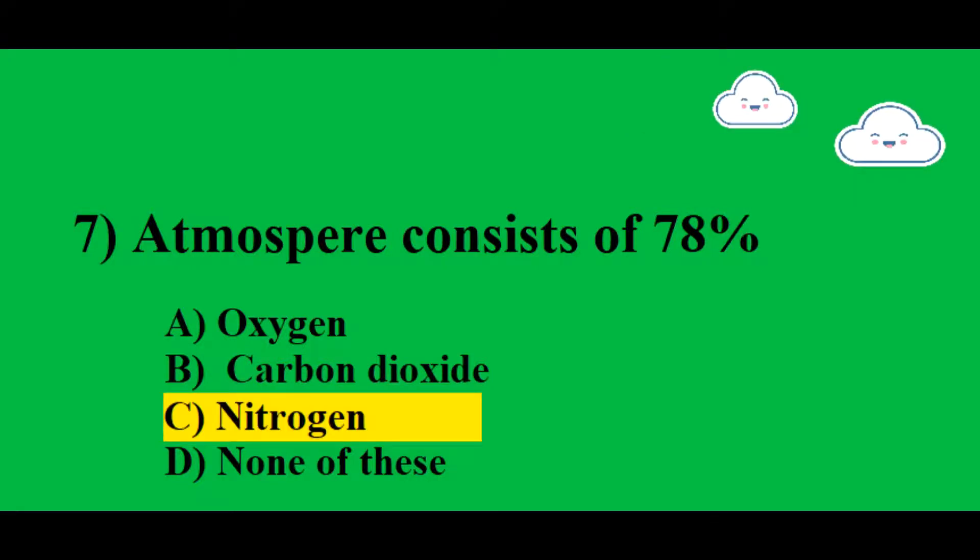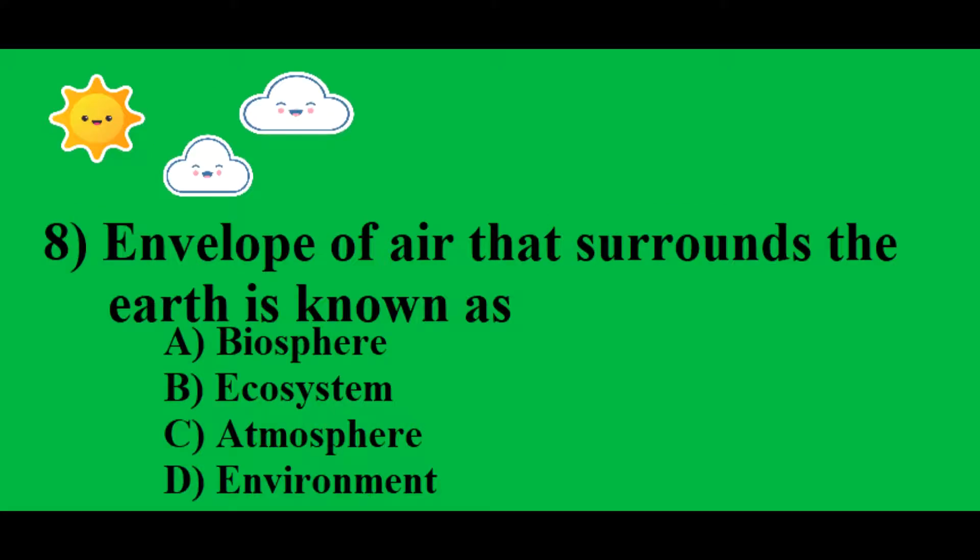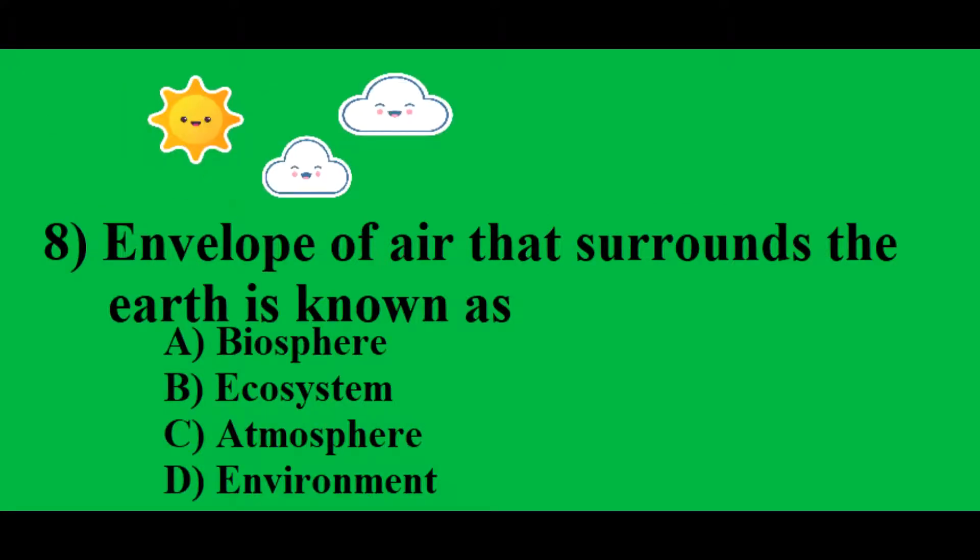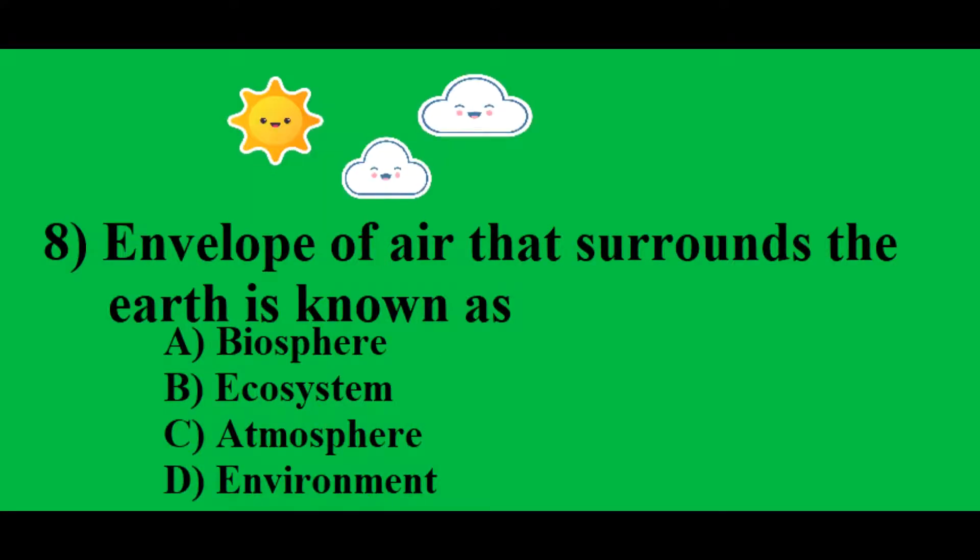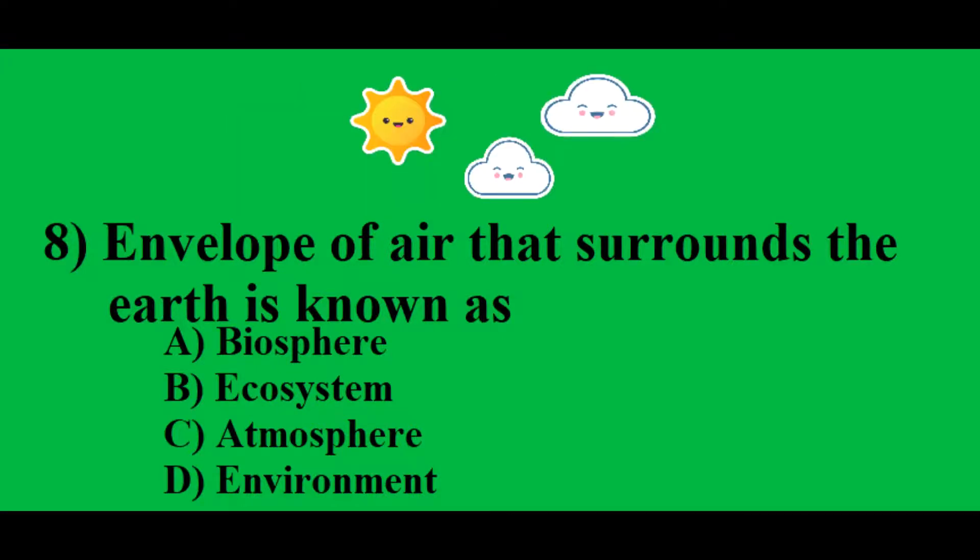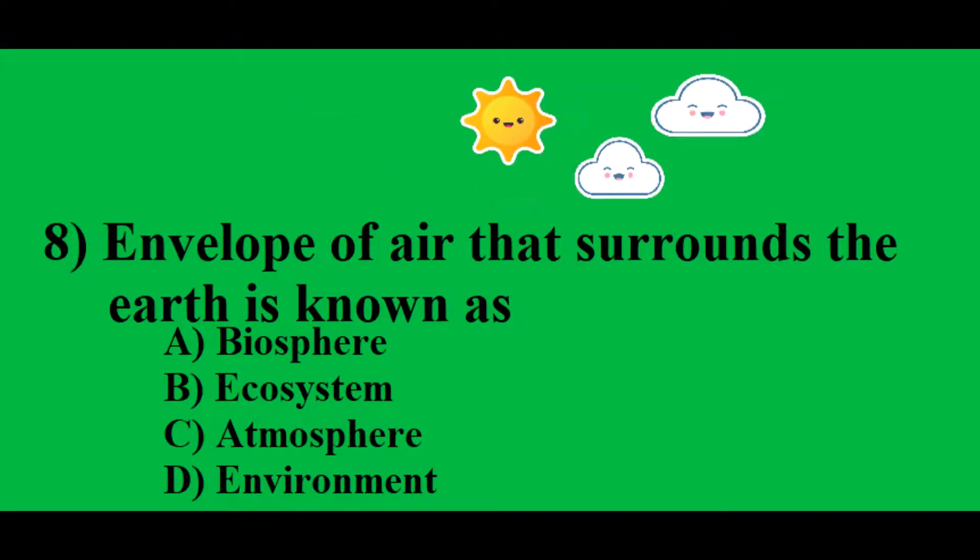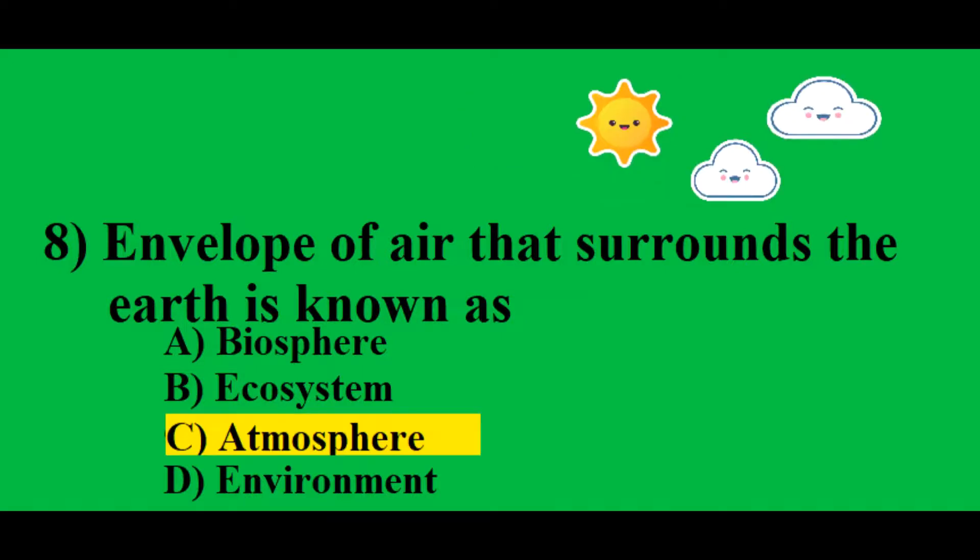Seventh question: Atmosphere consists of 78% C) Nitrogen. Eighth question: Envelope of air that surrounds the earth is known as C) Atmosphere.